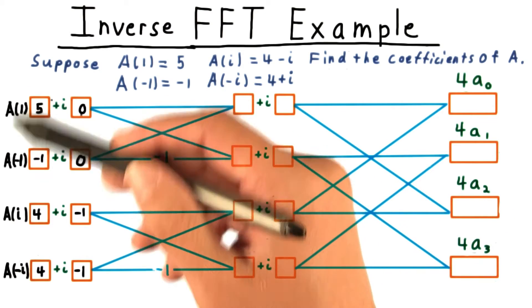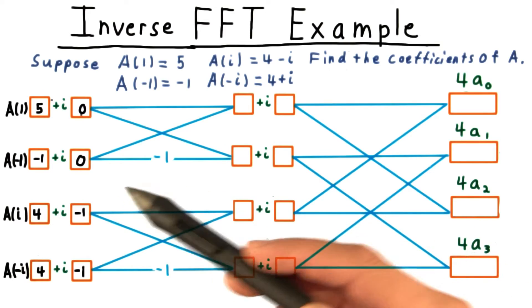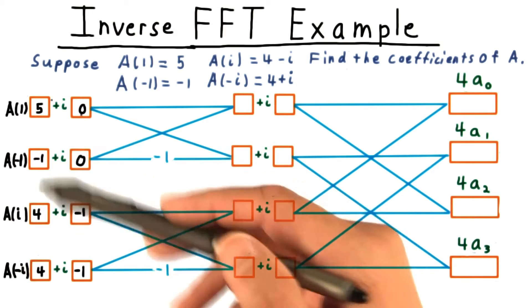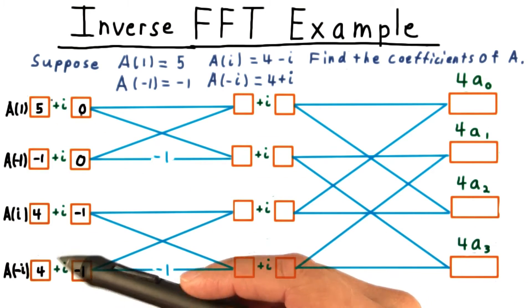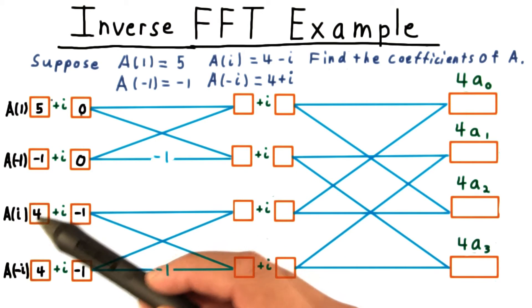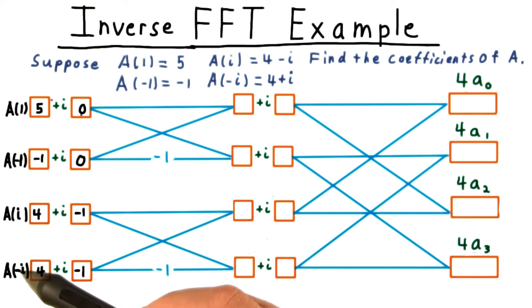We need to order the values according to the omega that was used in the forward transform. So thus, omega to the 1 is i, and omega to the third power is negative i here.